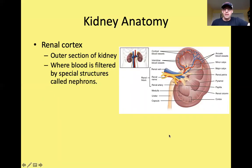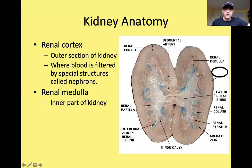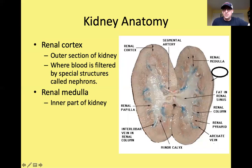Looking at a sagittal section through the kidney: the renal cortex is the outer region where blood actually gets filtered by special coiled structures called nephrons. The renal medulla is the inner part of the kidney. In a dissected sheep kidney, you can see the renal capsule as a thin outer layer, the renal cortex appearing slightly grainier, and the renal medulla as the darker, smoother inner area.